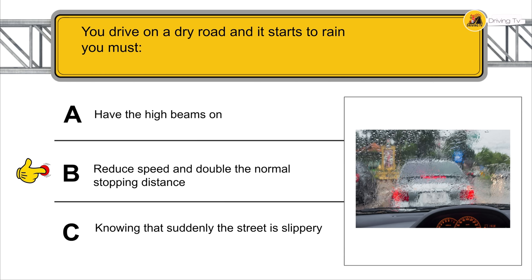You drive on a dry road and it starts to rain. You must reduce your speed and double the normal stopping distance.